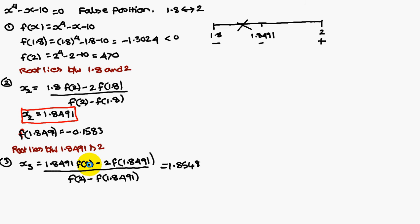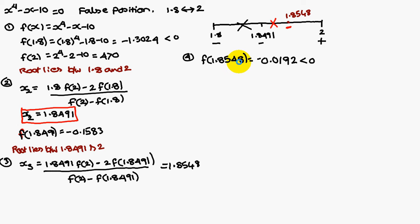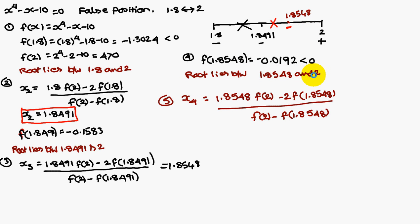f(2) value is already known. f(1.8491) is minus 0.1583. Substitute and simplify — you get x3 = 1.8548. Next, we have to find out the sign of f(1.8548). That is minus 0.0192, a negative value. Therefore, the root lies between 1.8548 and 2.